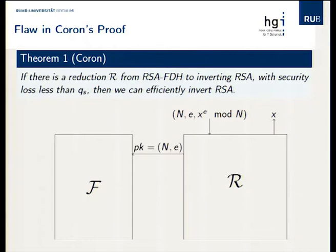The reduction takes the public key and sends it to the forger, there's some communication, and we get a forgery (M*, σ*). Using this forgery, we can compute X, and everybody's happy.